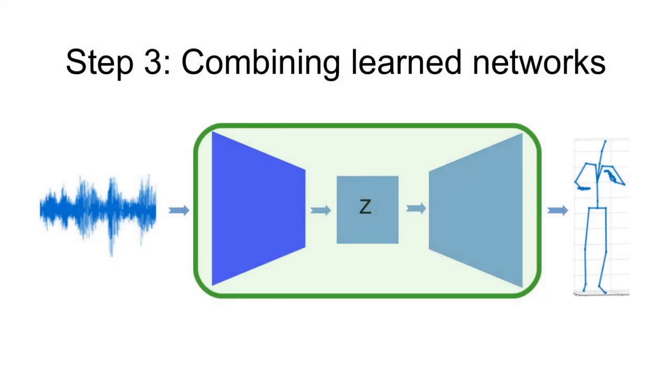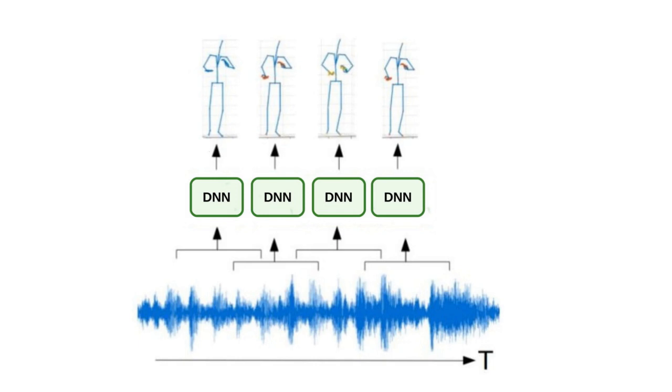The input speech segment is mapped to the motion representation, which is then decoded back to motion. The resulting neural network is then applied to each segment of the audio in order to produce a human pose for every output frame.